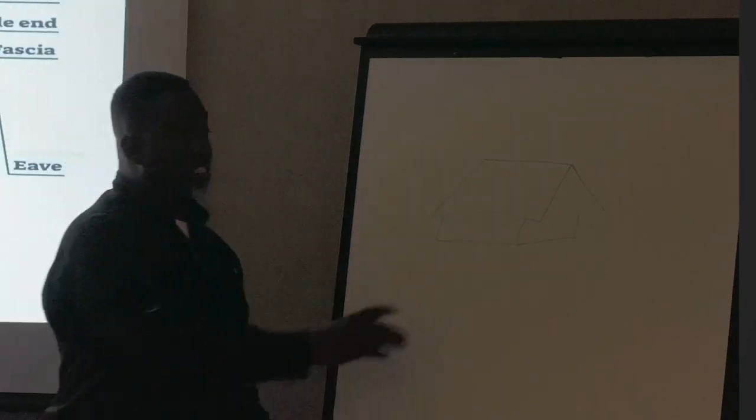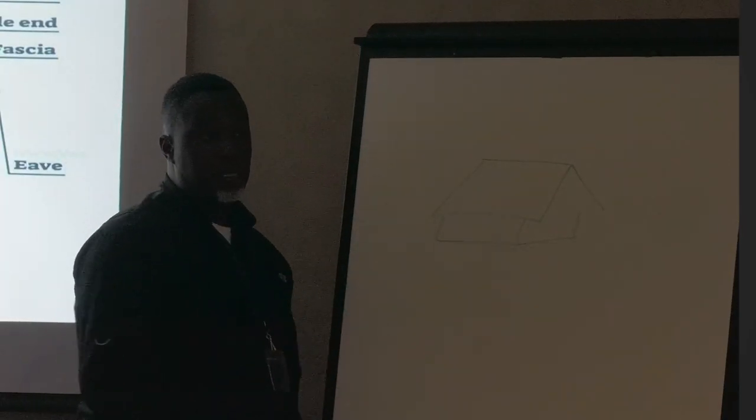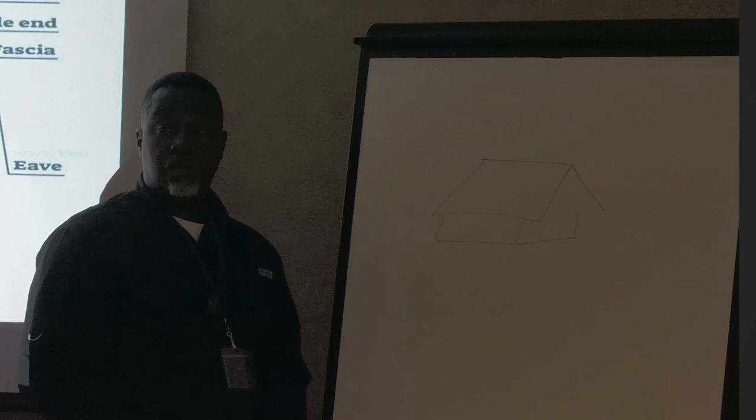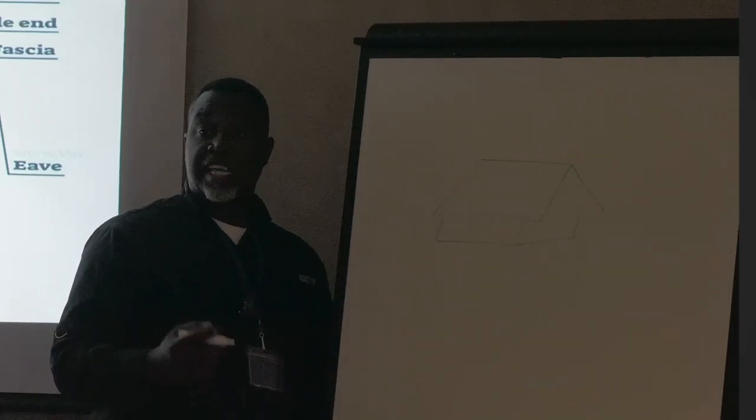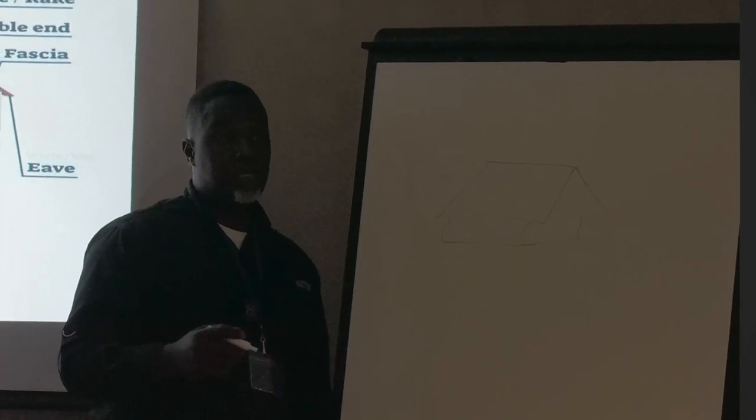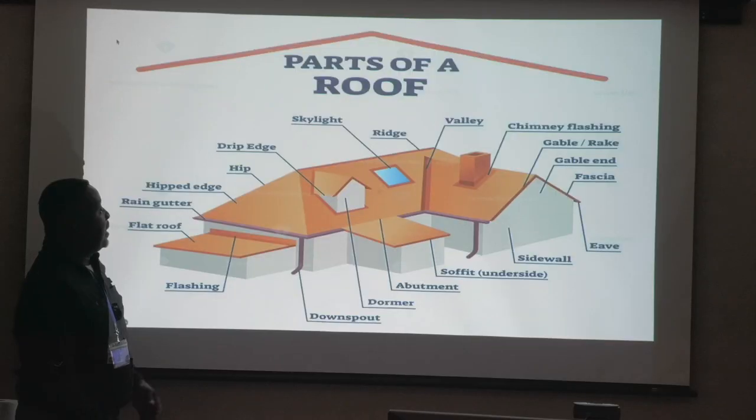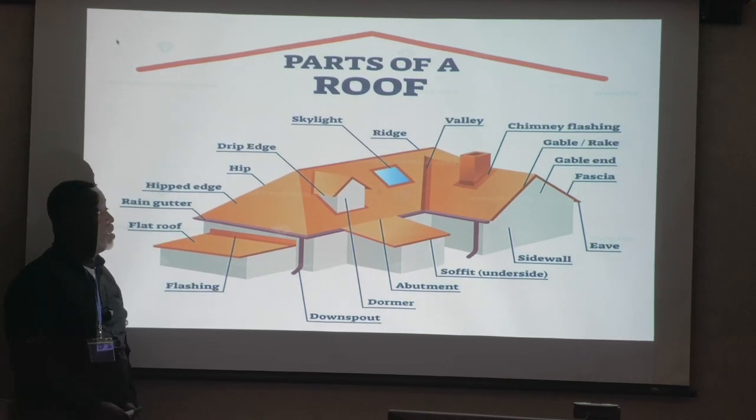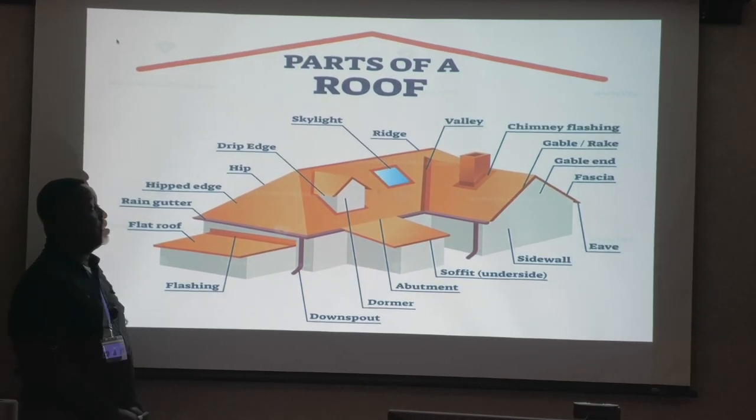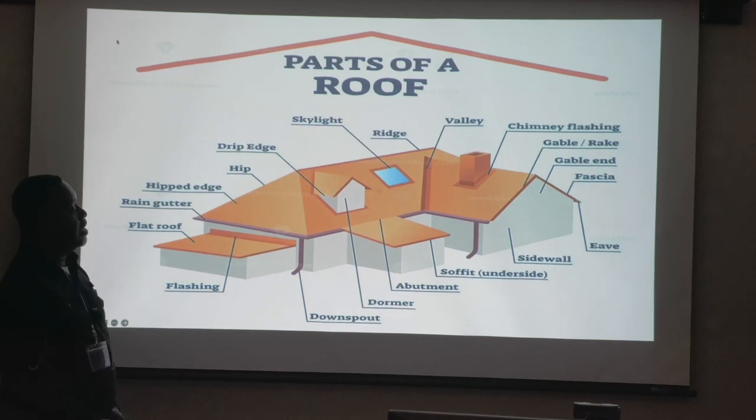this diagram. Can you guys see this diagram? Yes. Okay. So when you have a roof with only two sides, that is a gabled roof. So it's basically identifying the different aspects of the roof. Anybody have any questions of anything that's being pointed out here in this diagram?